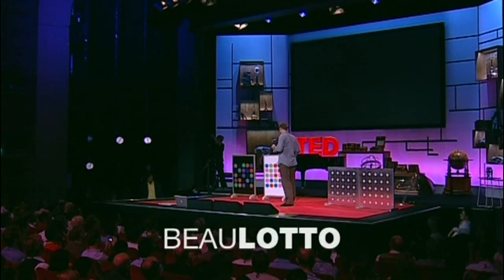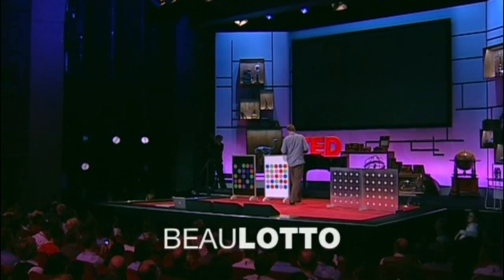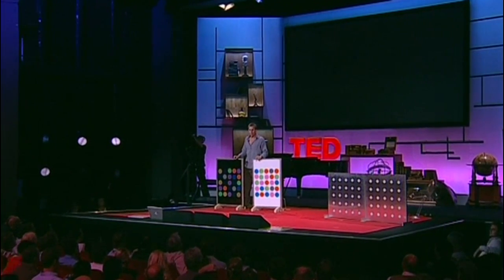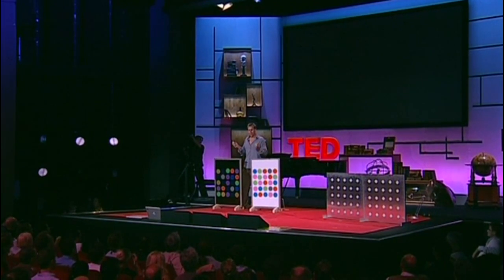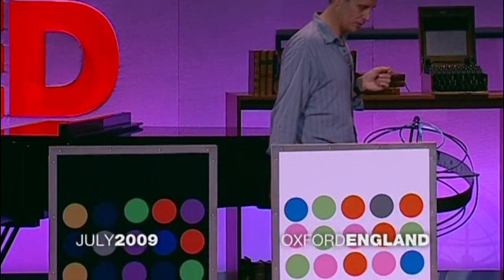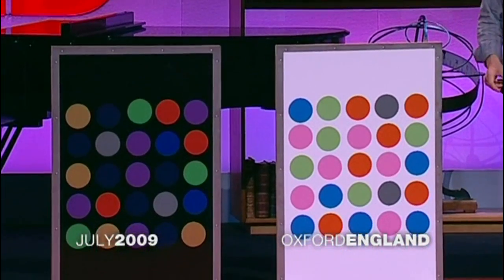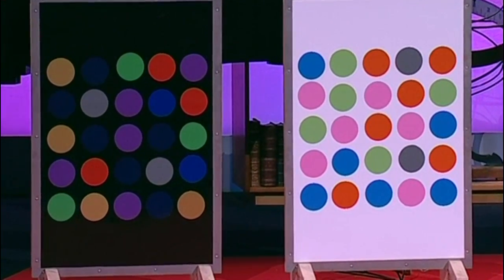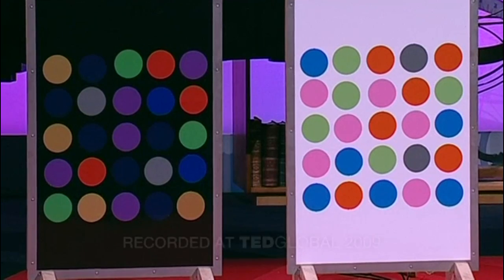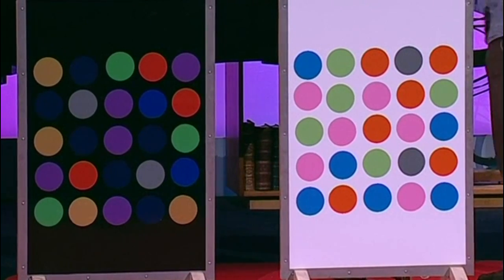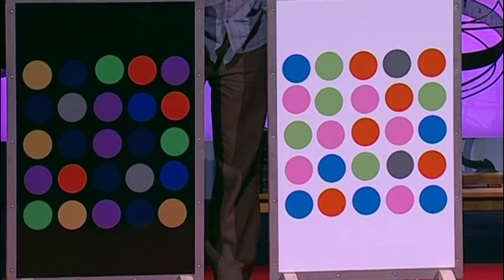I want to start with a game. And to win this game, all you have to do is see the reality that's in front of you as it really is. So we have two panels here of colored dots, and one of those dots is the same in the two panels. You have to tell me which one. I'll narrow that down to the gray one, the green one, and the orange one.